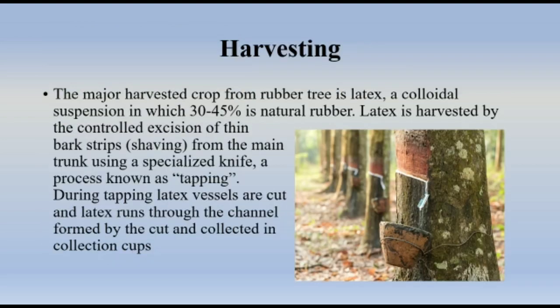Harvesting: The major harvested product from the rubber tree is latex, a colloidal suspension in which 30–45% is natural rubber. Latex is harvested by the controlled excision of thin bark strips from the main trunk using a specialized knife, a process known as tapping. During tapping, latex vessels are cut and latex runs through the channel formed by the cut and is collected in collection cups.